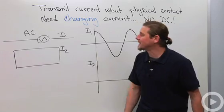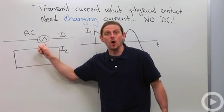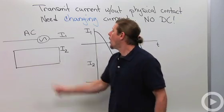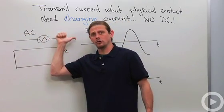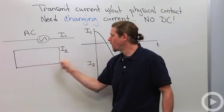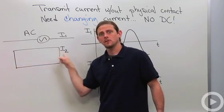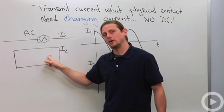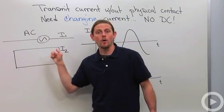So what people do instead is they use something called alternating current. So here's the idea. When this current is increasing to the right, the generated current will be counterclockwise. When this current is decreasing, the generated current down here will be clockwise.